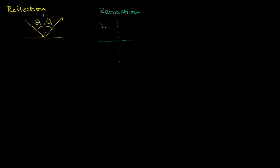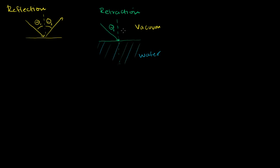Let's say we have the incident light ray coming in at some angle theta 1. So let's say that this up here is a vacuum — light travels the fastest in a vacuum, no air, no water, no nothing. And let's say that this medium down here is water. This is all water over here, and this was all vacuum right up here.